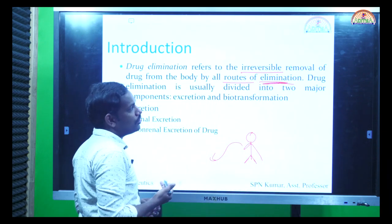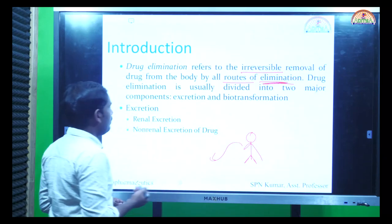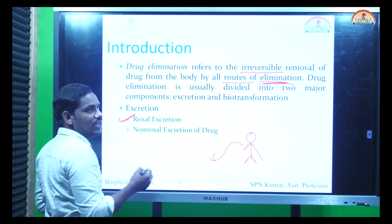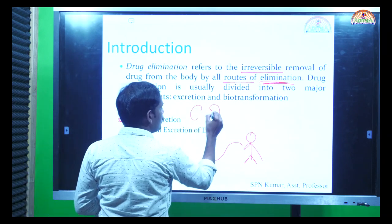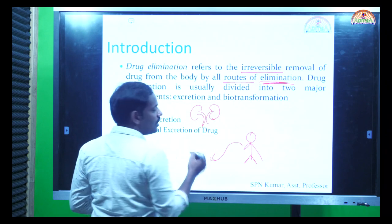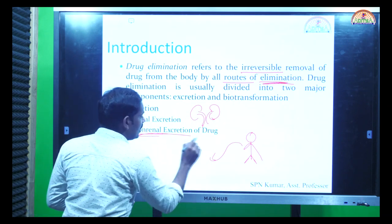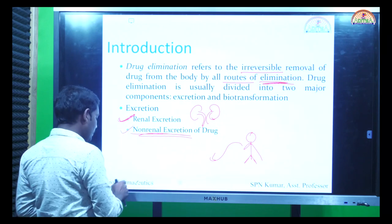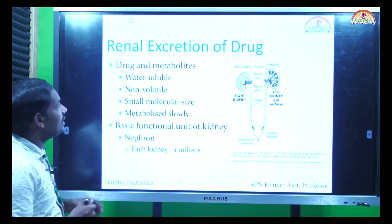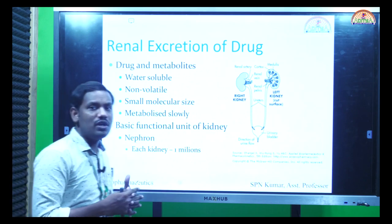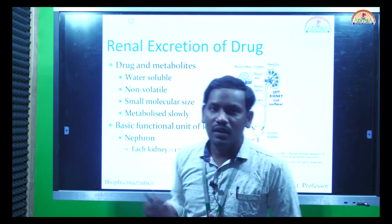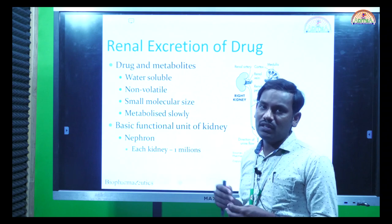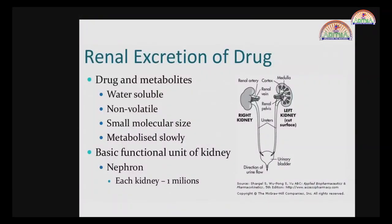Excretion is mainly divided into renal excretion, as mostly drugs are eliminated from the kidneys. If the kidneys are not going to eliminate them, other organs together — liver, lungs, skin — will eliminate the drug. Let us dig into the details and focus on renal excretion, because the majority of drugs are eliminated by the renal route. Here is our renal system, where we have two kidneys which comprise nephrons. Each kidney consists of around one million nephrons.